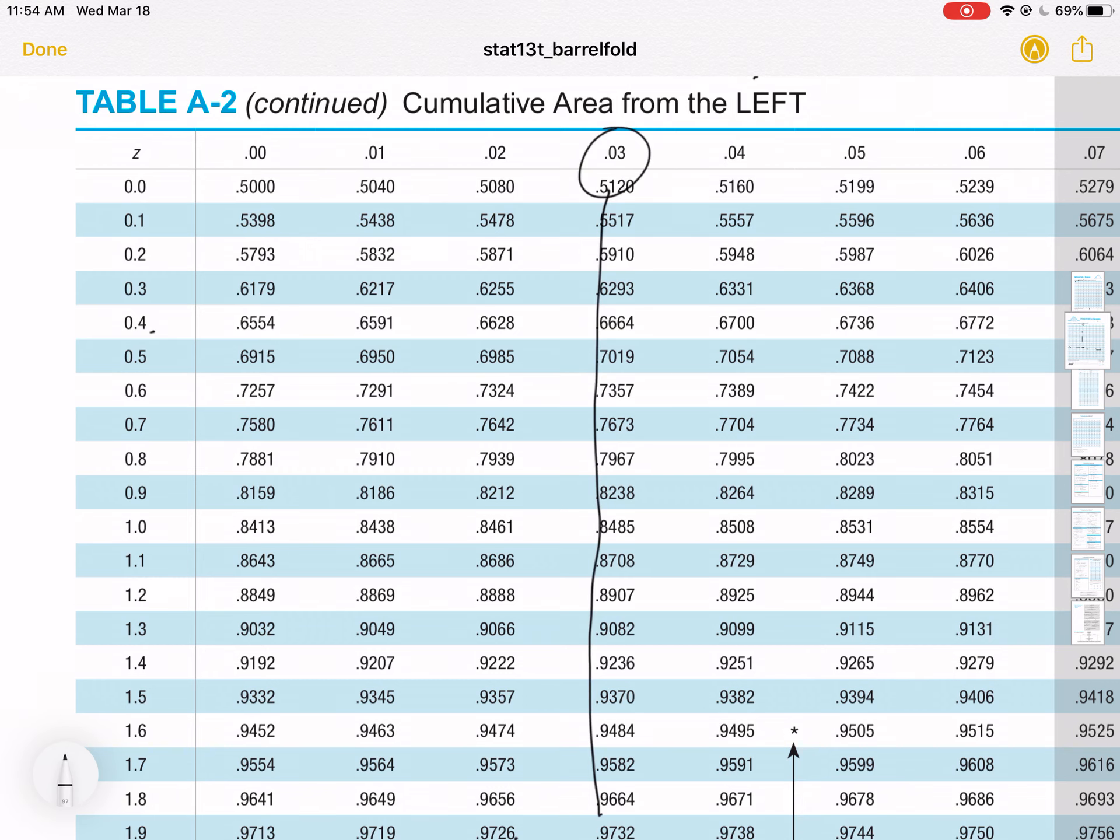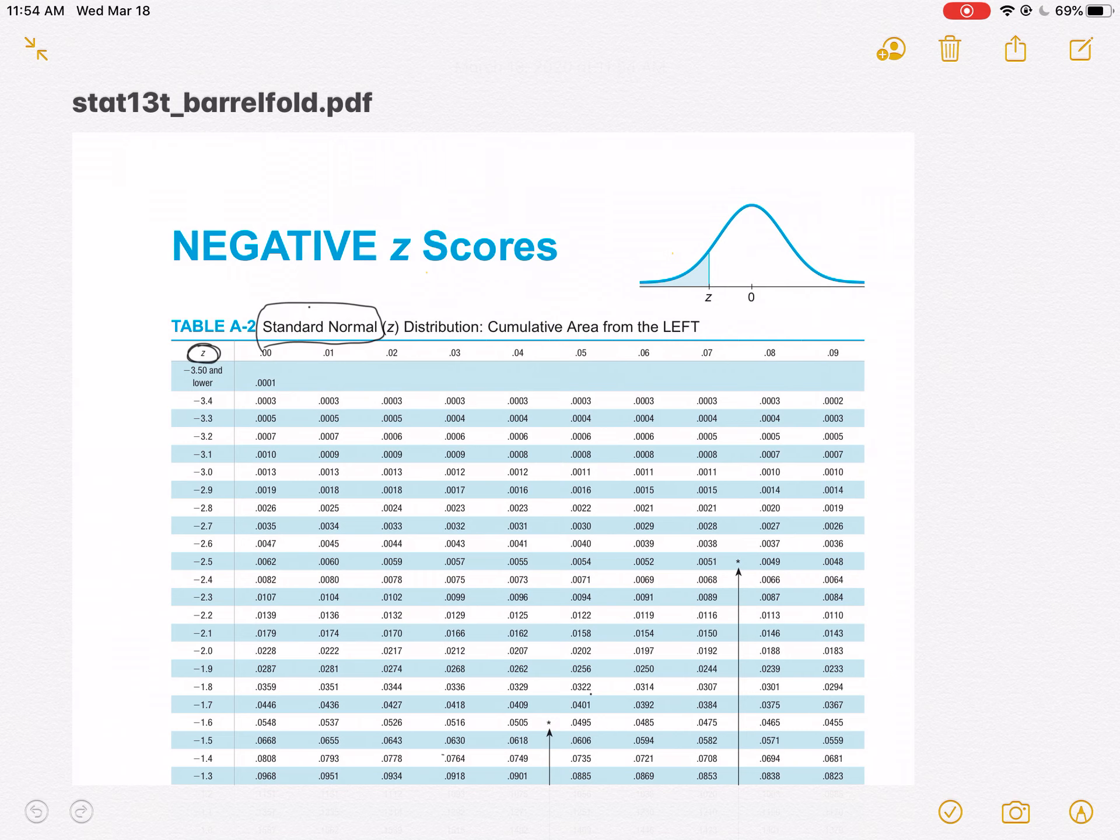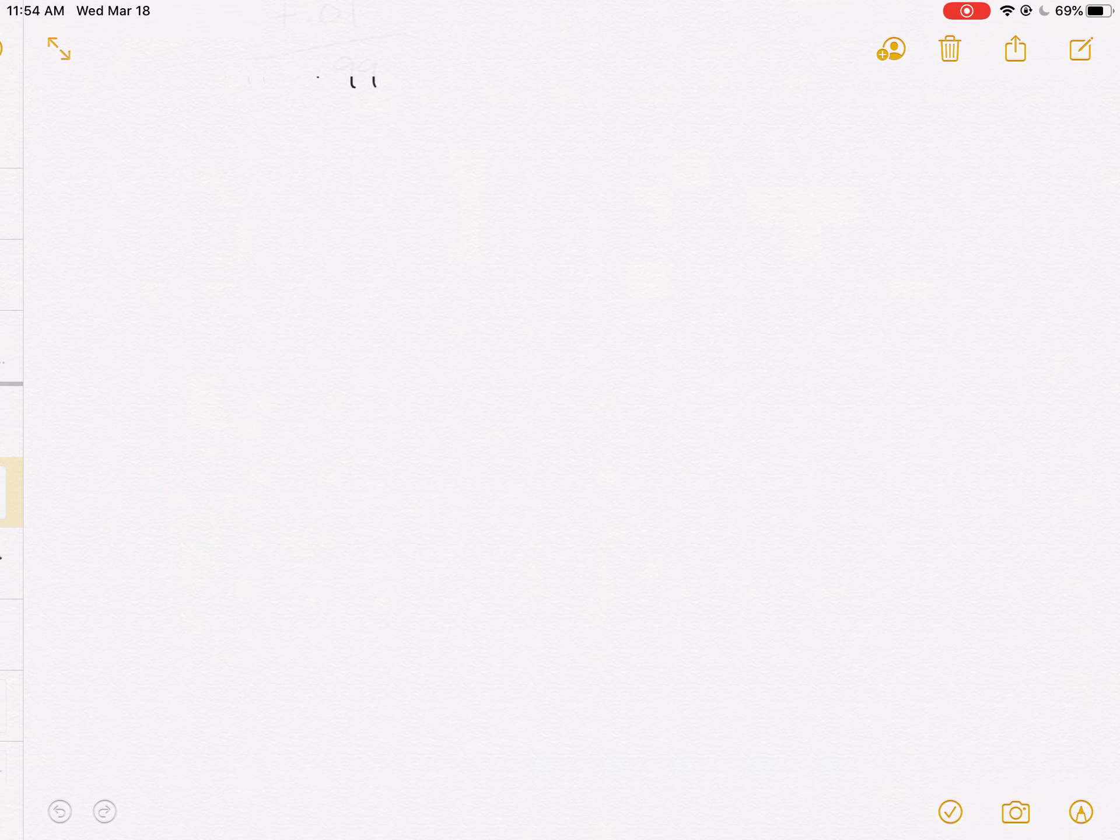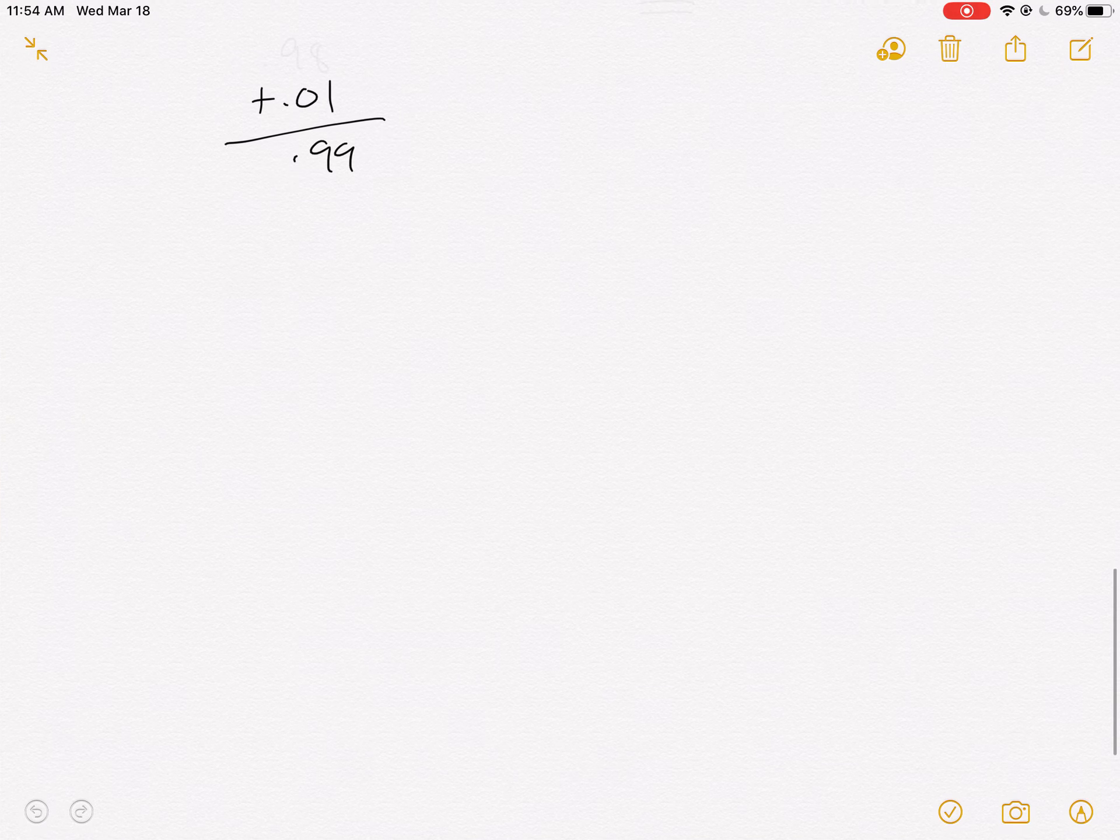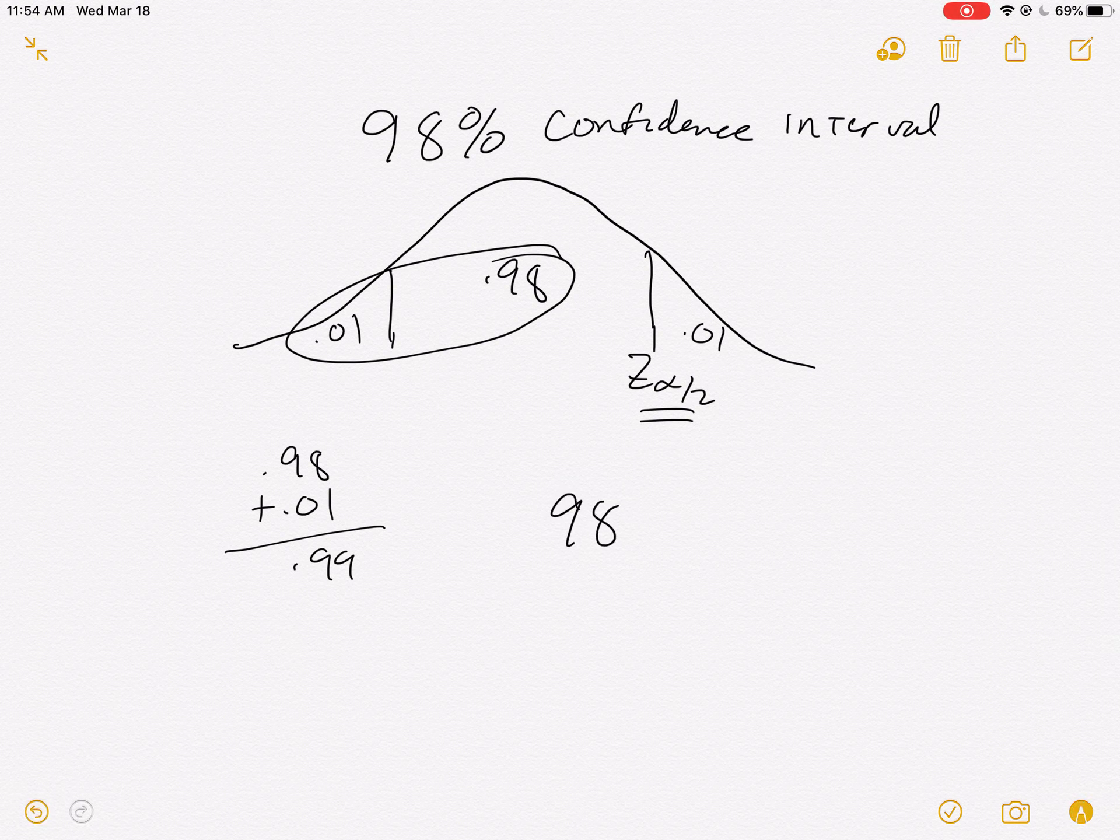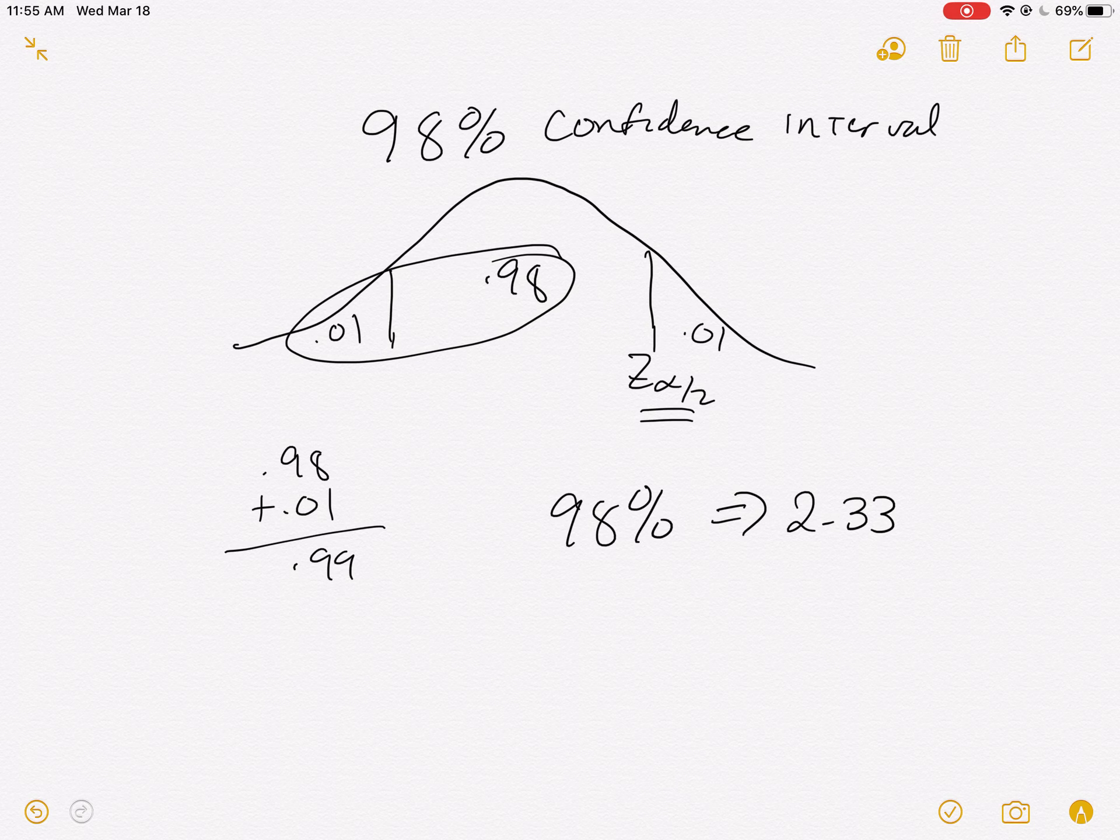It's in the 2.3 row, and it's in the 0.03 column. And so our value is 2.33. So the critical value, or the z alpha over 2 value, for 98%, is 2.33. That's how you find these critical values.